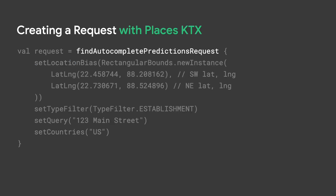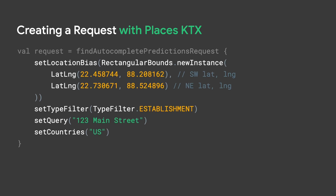With the KTX library, creating a Find Autocomplete Predictions request can be done using its lowercase name, followed by setting the same fields in the provided lambda. This approach enables you to create objects more expressively without the use of builders.